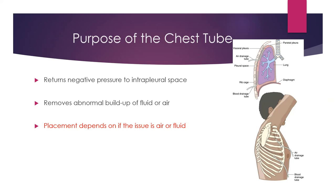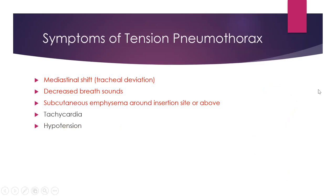The whole purpose of a chest tube is either to drain air or to drain fluid, and your placement really depends on the issue. Do we have an air problem or a fluid problem? Think about this logically — air tends to rise, so we would anticipate a higher insertion site for air. Fluid is heavy, so it tends to go to the bottom of that pleural space, and we would insert the drain towards the bottom. Air rises, fluid drops.